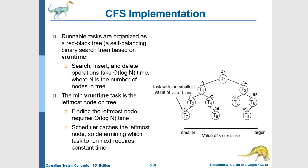The CFS scheduler always needs to be able to identify the task with the lowest virtual run time. It does this by keeping the virtual run times of all tasks in a data structure known as a red-black tree, which is a self-balancing binary search tree. Every node has at most two children, and we can search this tree using binary search, making the search O(log n) time. The minimum virtual run time will always be the leftmost node, findable in O(log n) time. To speed things up, the scheduler caches the leftmost node so it can be determined in constant time.